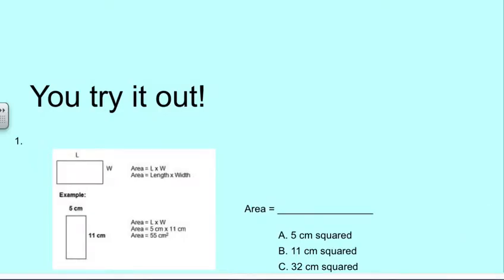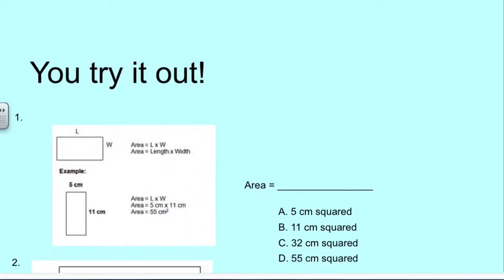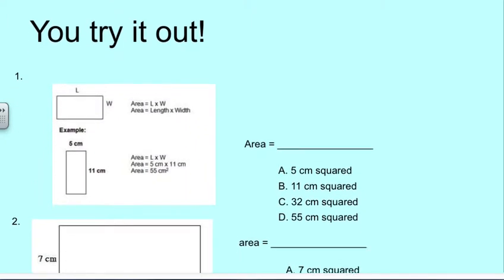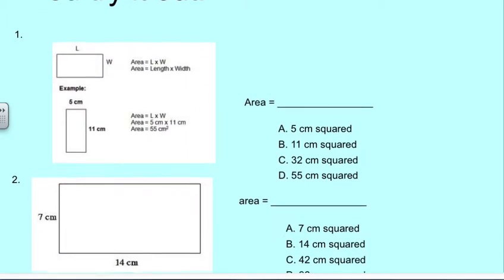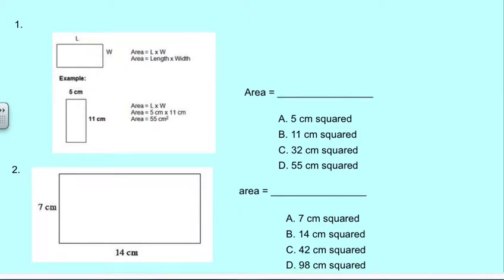Now, I want you to try it out. You're going to jot down the answers in your notebook and then link it to the quiz that's linked to this. So number one, here it is. Here's the base, and here's the height. And you're going to multiply those two together and choose one of these answers. Is it A, five centimeters squared? B, 11 centimeters squared? C, 32 centimeters squared? Or D, 55 centimeters squared?